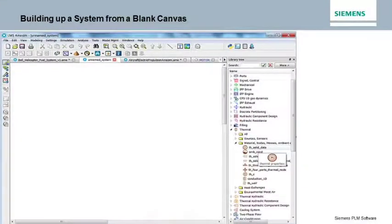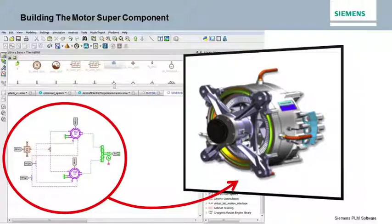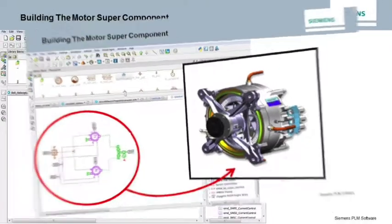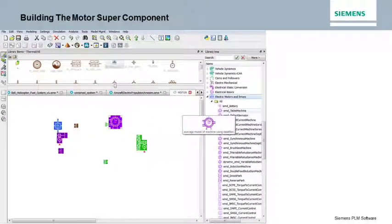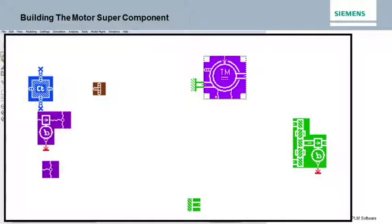Let's take a look at how systems are built up from a blank canvas. We'll start by building a motor super component. The user starts by locating the basic elements from the appropriate libraries and drags them into the workspace. You'll notice that the elements come in with a shadowed background. That designates that the elements are not fully connected.